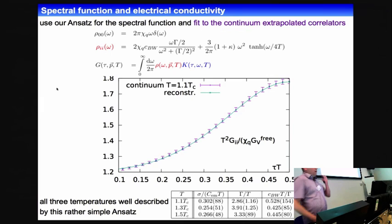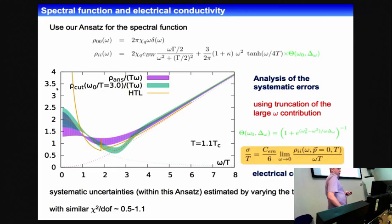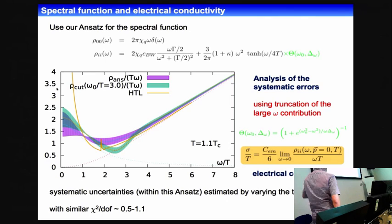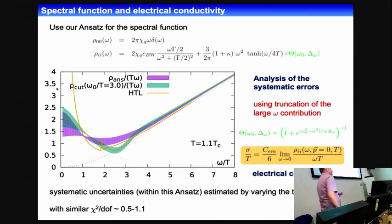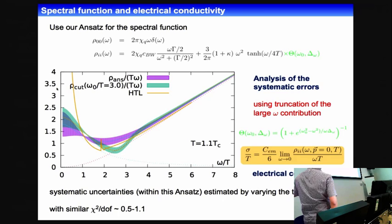We also wanted to understand the systematic uncertainties in this ansatz. We changed the ansatz by cutting the large omega part of the spectral function with a smeared step function. This also describes the data very well and gives a second band in the results. The simple ansatz gives one band, and the modified ansatz with the large omega part cut gives a bit less contribution at high omega but a larger contribution in the limit omega to zero — a larger electrical conductivity.